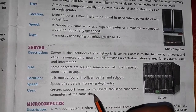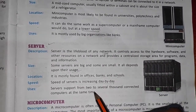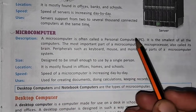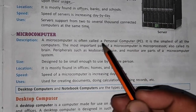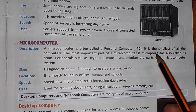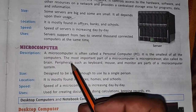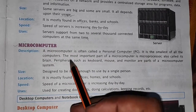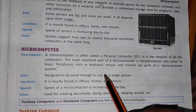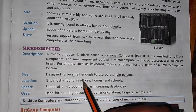A server supports from two to several thousand connected computers at the same time. Servers are mainly used to handle a network — wherever you use something over a network, you need a server. Next we have the micro computer, also called a PC or personal computer. The computers we use at home, school, or as laptops are called micro computers. They are small in size and have a microprocessor chip — the CPU or brain of the computer.